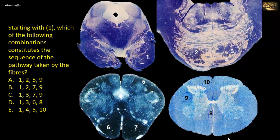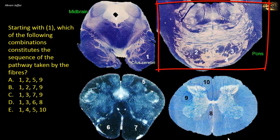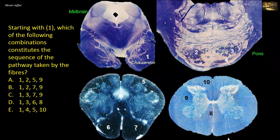Which of the following combinations constitutes the sequence of the pathway starting at 1? The pathway starting at 1 is located in a section of the midbrain. The most anterior part is the crus cerebri, which contains corticofugal fibers: corticopontine, corticobulbar, and corticospinal fibers. These fibers arise in the cerebral cortex and descend as corticospinal, corticobulbar, or corticopontine. We can follow them as they descend in the next section of the pons, where they form the longitudinal fibers traversing the basilar part of the pons — either 2 or 3. Fibers labeled 4 represent the horizontal pontocerebellar fibers, so they are excluded.